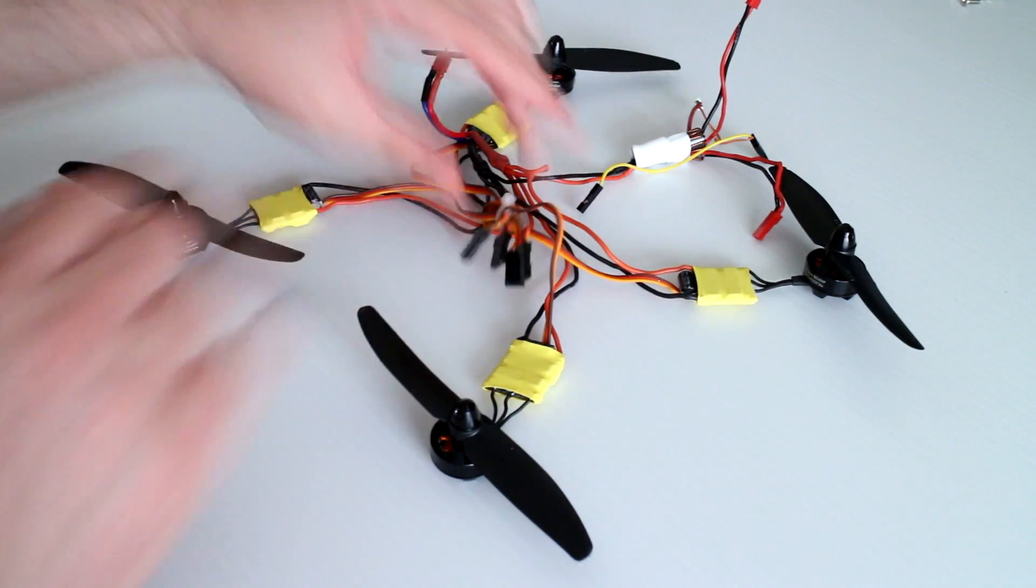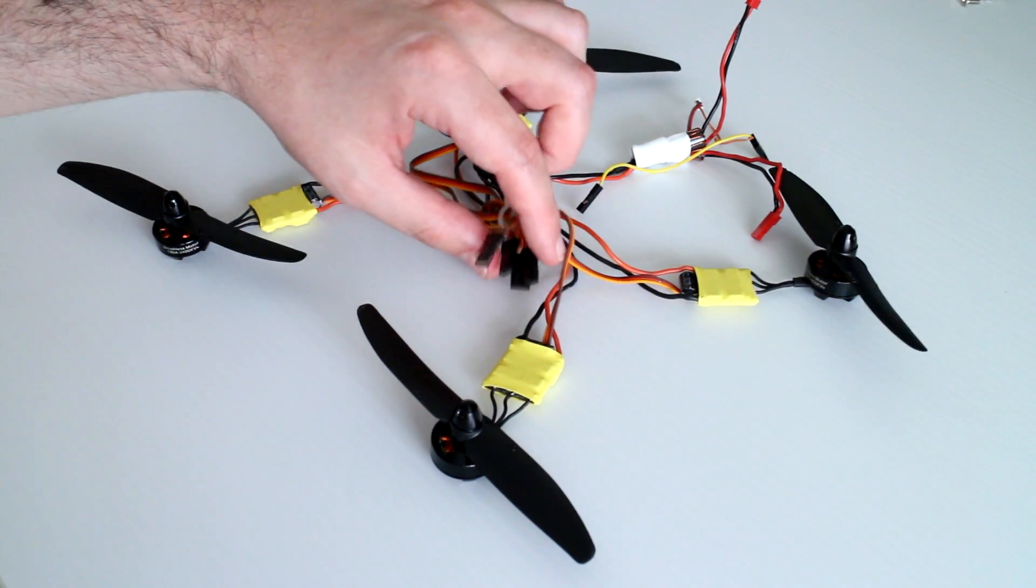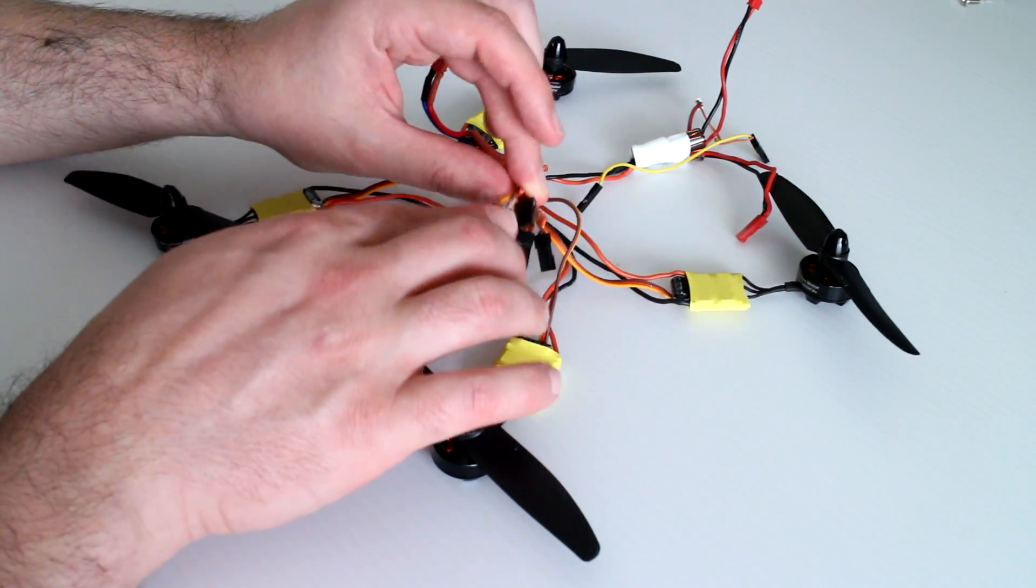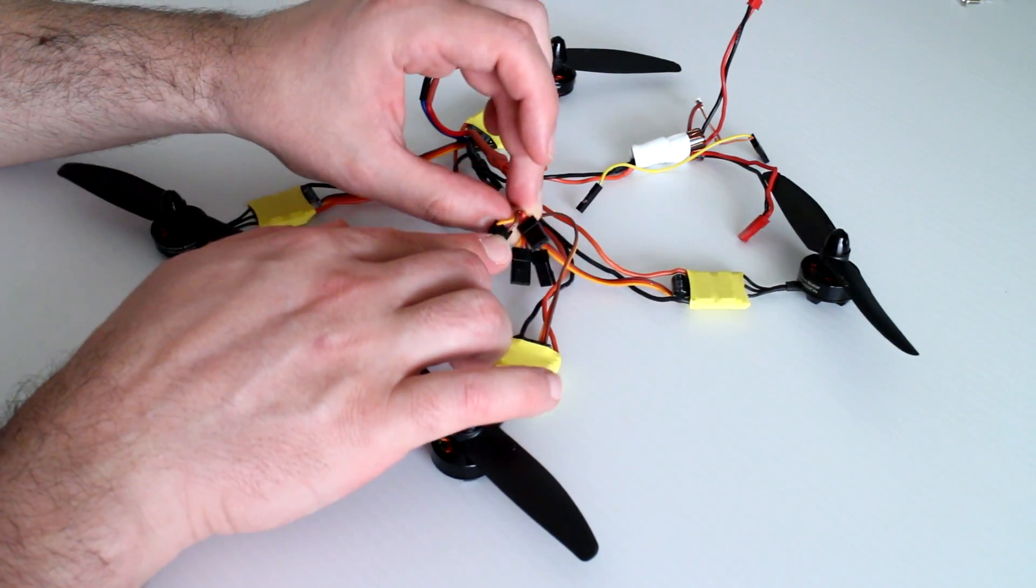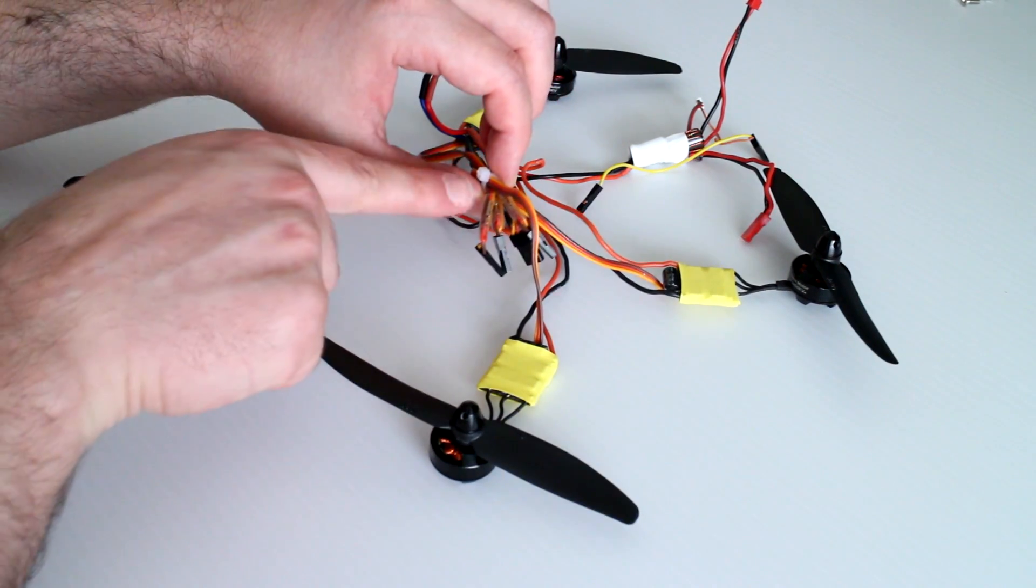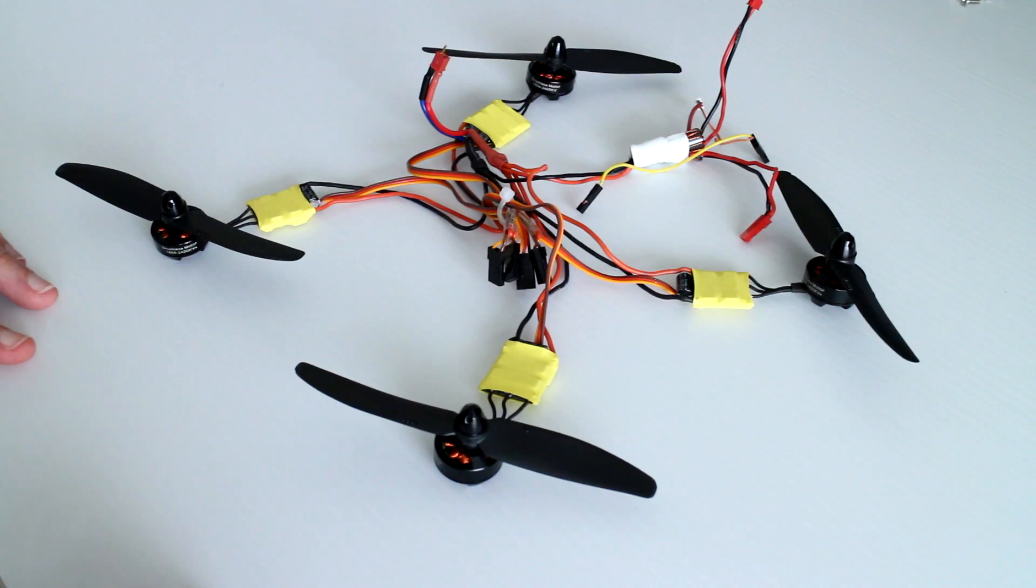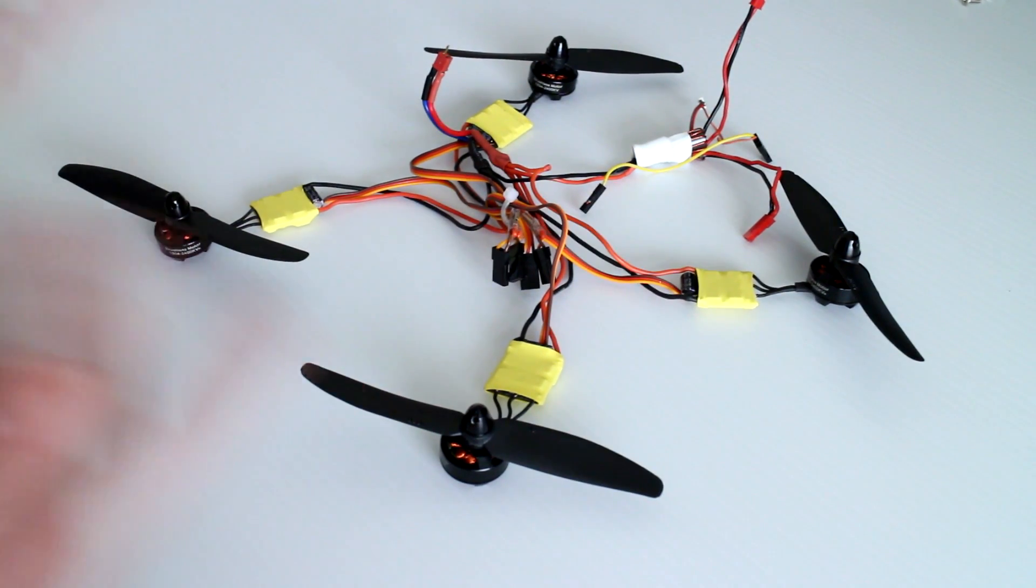Out of these four ESC servo cables I've simply left one intact but the other three I have removed the positive wire out of the connector and simply taped it back onto itself. I've done that so if I want to use the five volt BEC in the future I can simply untape it and pop the connector back into the socket.